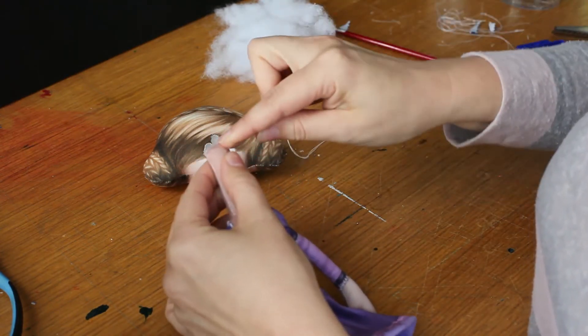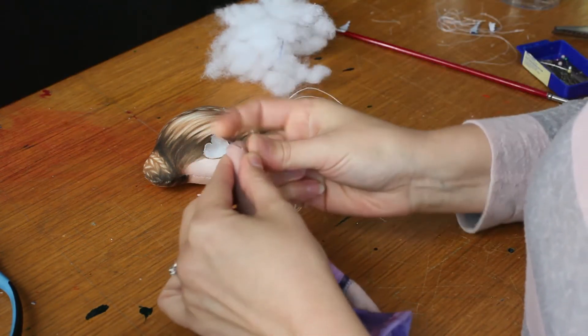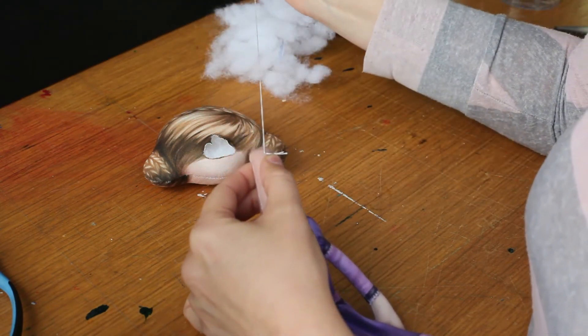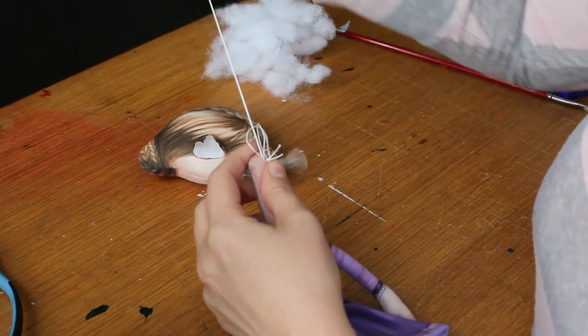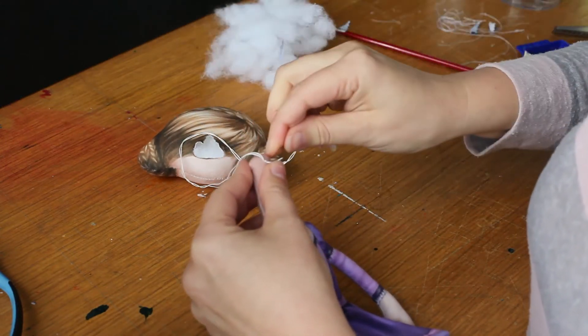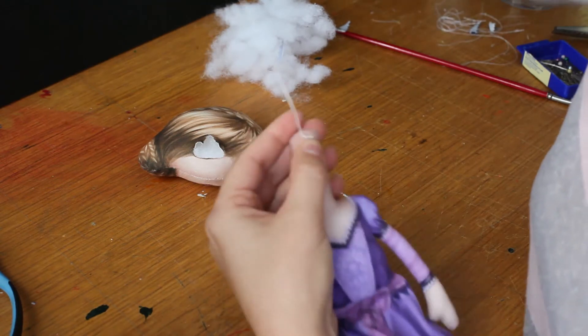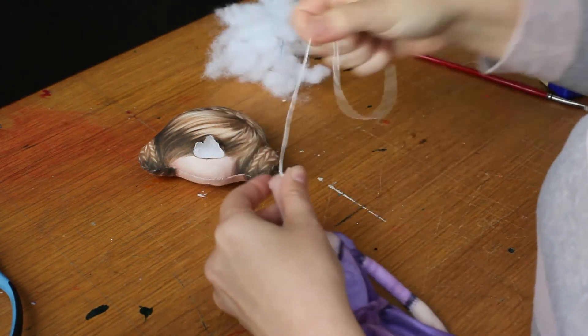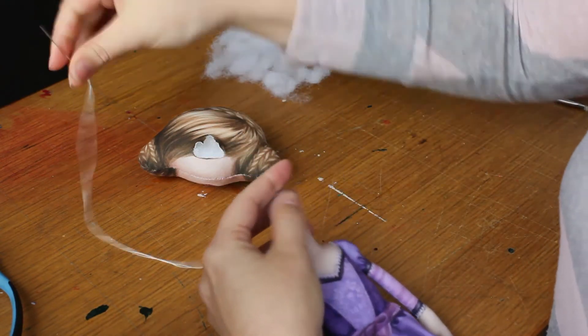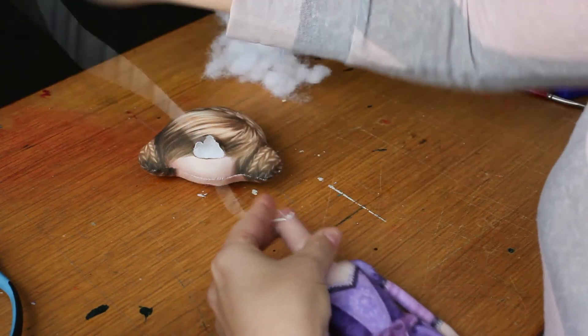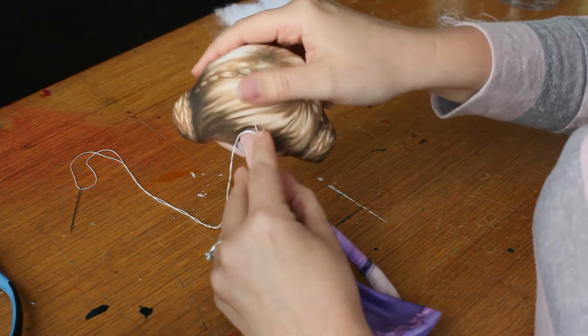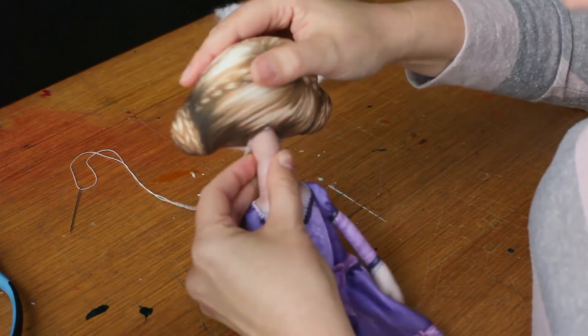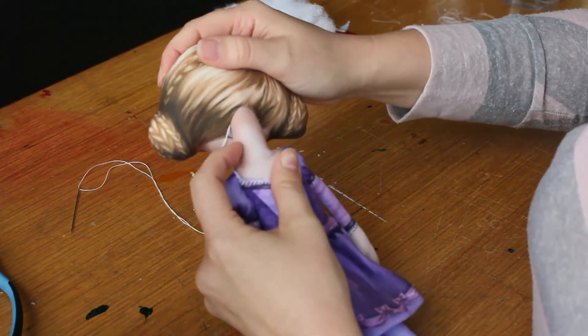I'm just going to pretty quickly anchor a stitch in here. It doesn't matter if the thread and stuff is still showing or if it's messy, because it'll be up inside the head. I'm using a nice, strong thread here. You can use something that's a bit more flesh coloured, but the stitching should be invisible, so it doesn't really matter. Let's put the head back into position.